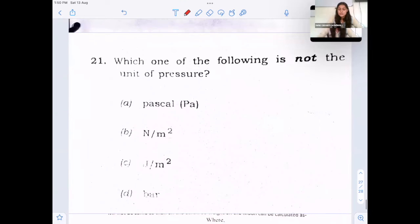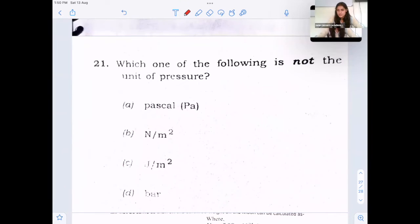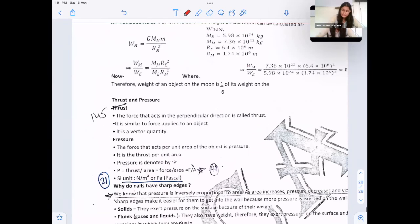Next question, which one of the following is not the unit of pressure? Very easy question, Pascal is unit of pressure. Newton per meter square is unit of pressure. These two are the units which are used to describe pressure exerted by solids. Bar is used to describe pressure exerted by gases and other such units are atmosphere, mm of mercury and torr. But joules per meter square is not the unit for pressure. Option C. So here units are given.